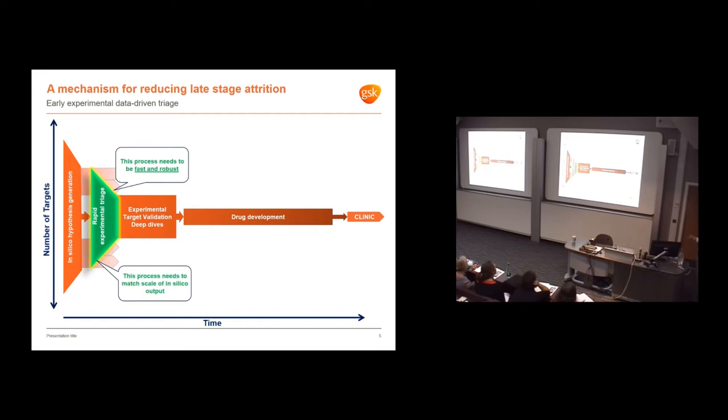This process needs to be fast and robust. We don't want to hold up drug development too much. We also need to match the scale of in silico output. You can come up with a huge list of targets using computers, but it's difficult to match that in the lab.